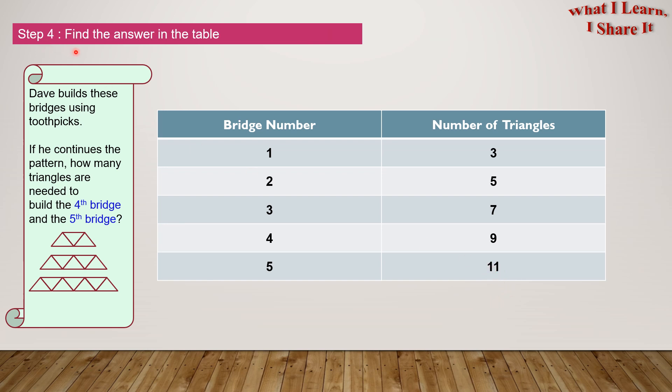Step 4: Find the answer in the table. So we clearly see that the 4th bridge has 9 triangles, and the 5th bridge has 11 triangles.